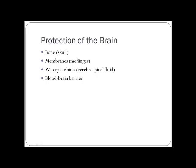The brain is protected by the skull, the meninges, cerebrospinal fluid (CSF) — a watery cushion — and the blood-brain barrier, which keeps out bacteria and large debris. CSF acts like a cushion, similar to amniotic fluid for a baby. The meninges are a tough fibrous coat around the brain, and the skull provides rigid outer protection.